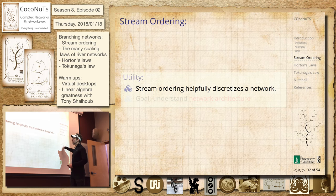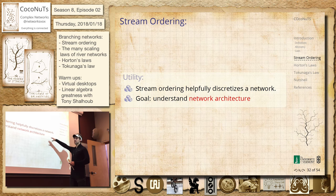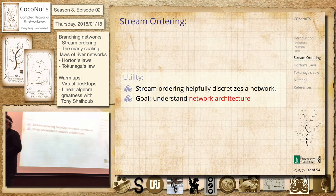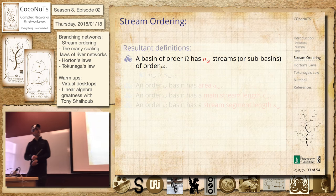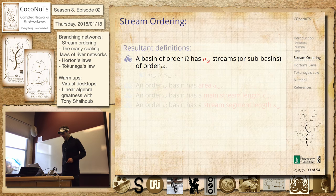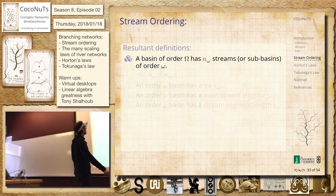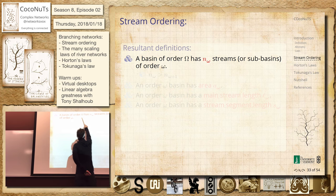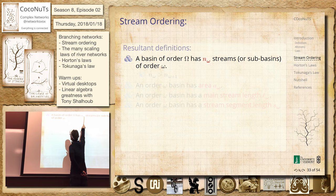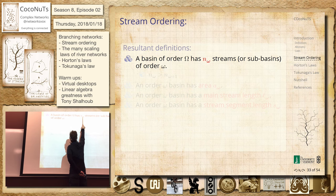So we've discretized the network — broken it up into little pieces so we can try to understand the architecture. So now we've got this labeling: we've got some basin of order omega, and then it's going to have within it — we're going to label it like this — there are going to be n streams of order little omega. The way this works is there are more of the little ones. As you go up in order you have fewer of them. There's only going to be one stream of the overall basin order: if it's an order-seven basin there'll be one order-seven stream, more order sixes, more order fives, more order fours.